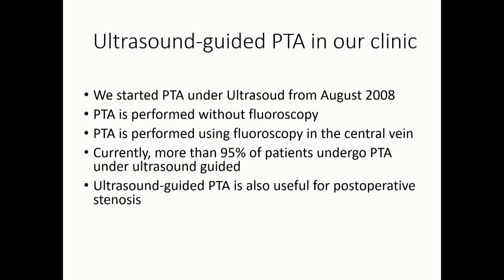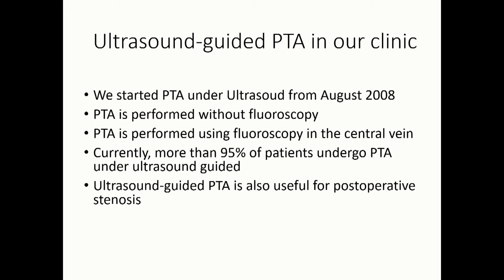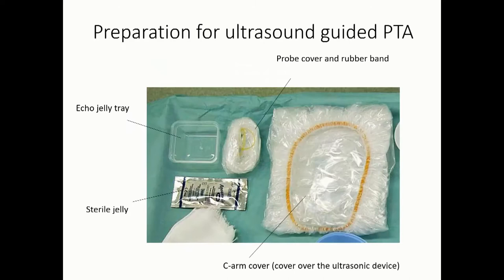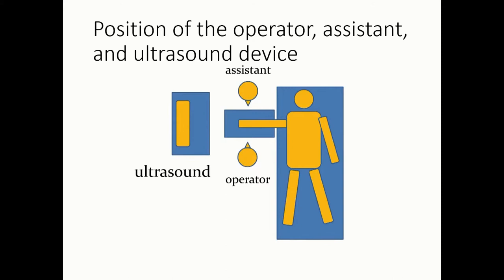Ultrasound-guided PTA is also useful for postoperative cases. With a linear probe — 12 MHz — for preparation of the ultrasound-guided PTA, we use sterile jelly, an echo jelly tray, probe cover and rubber band, a CM cover, and a cover over the ultrasound device. This is the position of the operator, assistant, and ultrasound device: patient, ear operator, assistant, and ultrasound device.